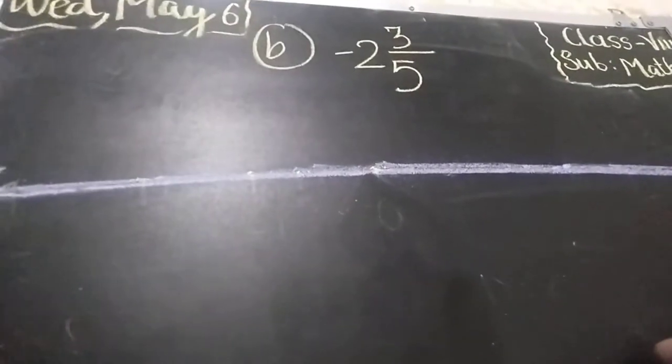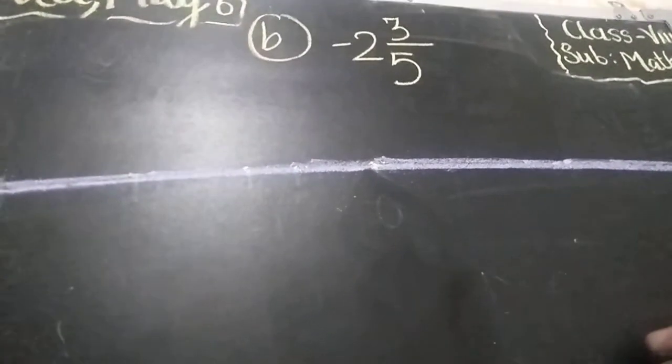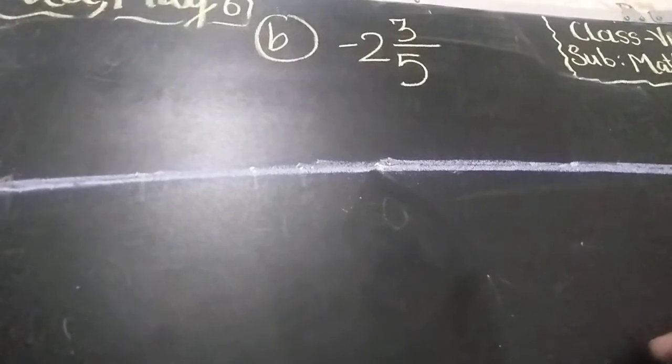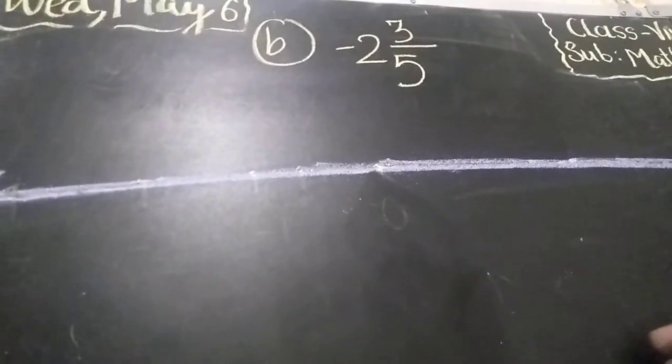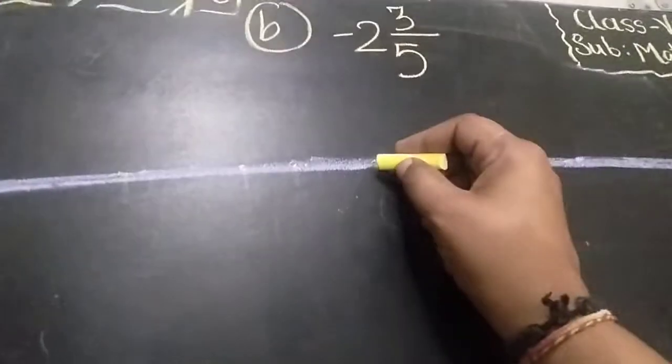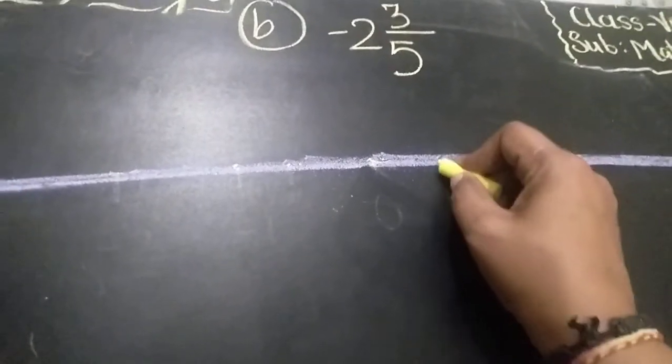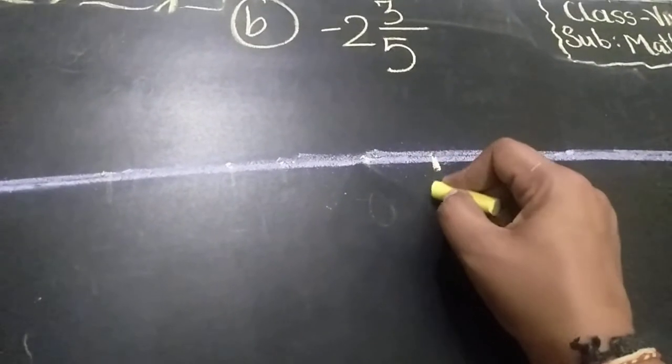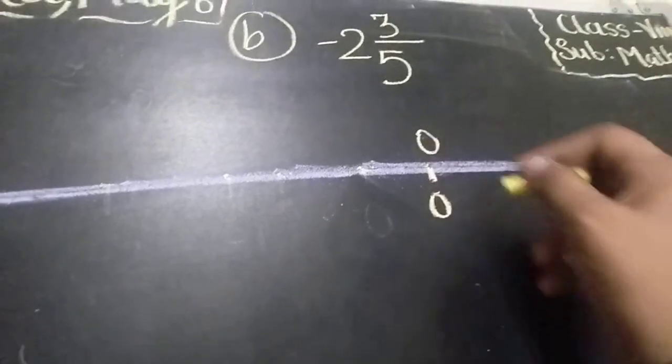Now, in this we have to represent minus 2, 3 by 5 on a number line. So let's see how will you represent this number. Similarly, firstly you have to take a point O that is called 0. This represents O.